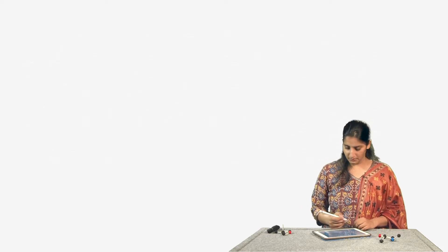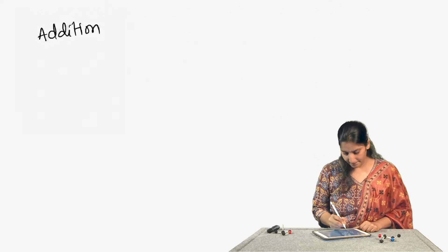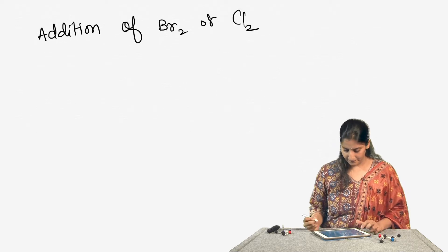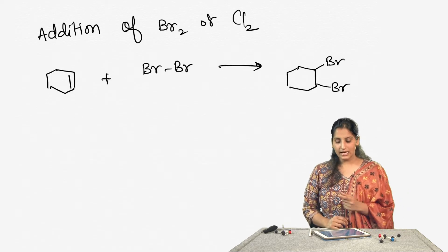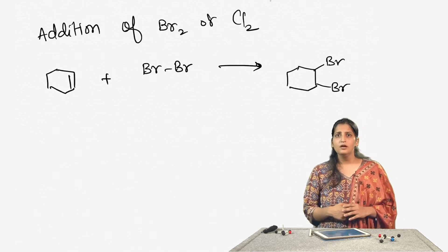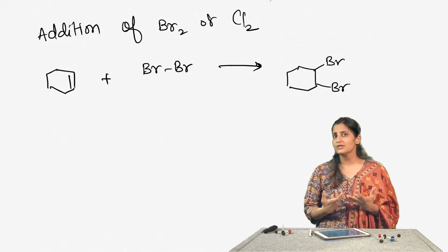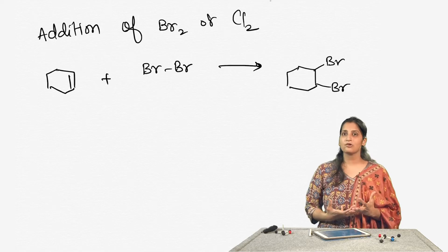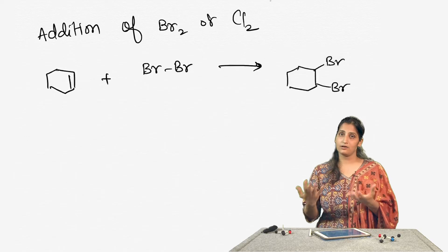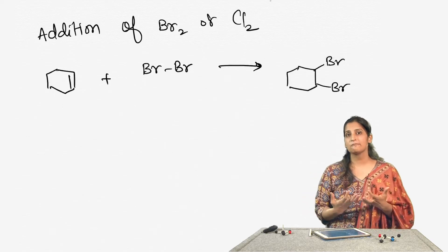I am going to draw one more reaction — this is the addition of bromine or chlorine on the carbon-carbon double bond. If I have to just write the reaction, it looks like this where bromine gets added on the carbon-carbon double bond. But this reaction is surprising because we cannot really quickly figure out which is the electrophile here, since electrophiles are electron-loving compounds that are kind of positively charged.